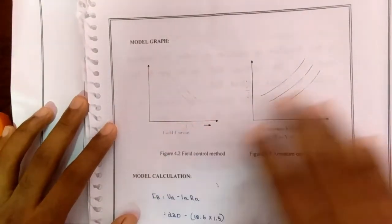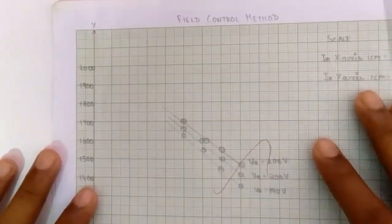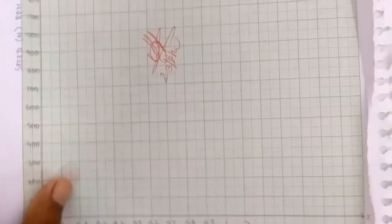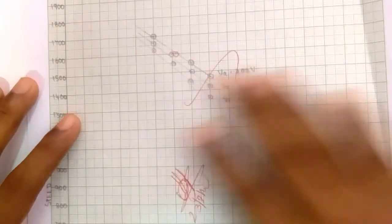So we're gonna plot these two graphs. For field control method you can take speed in y-axis and then field current, that is field current IF in x-axis. So the graph will be like this.